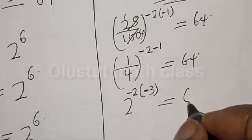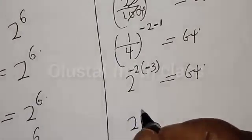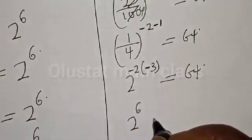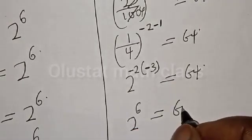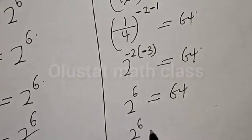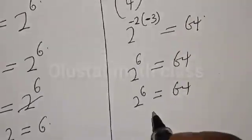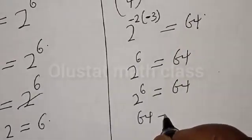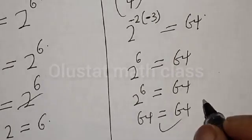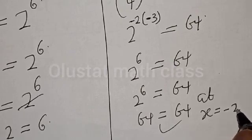Then we have 2 raised to power negative 2 times minus 3, that will be positive 6, must be equal to 64. And 2 raised to power 6 is equal to 64. Therefore we have 64 is equal to 64, which satisfies the given equation at x equals minus 2.